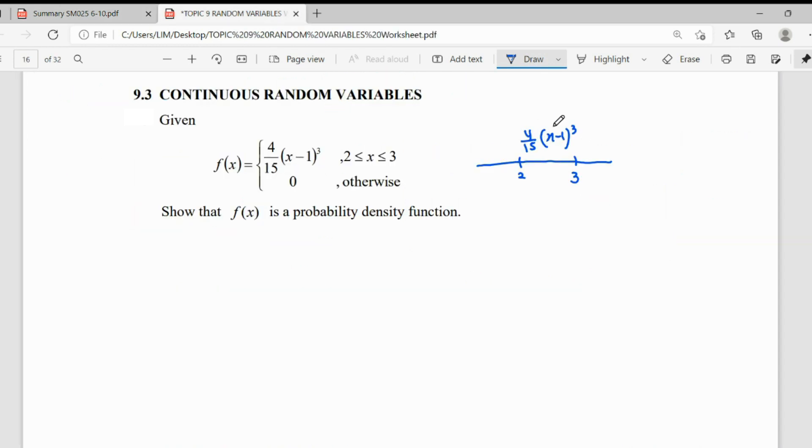For this area under the graph, we're going to integrate from 2 up to 3 for this function. We have to calculate until we get 1. Once we get our value of 1, it means we can show this is a probability density function, which is the same as showing this is a continuous random variable.